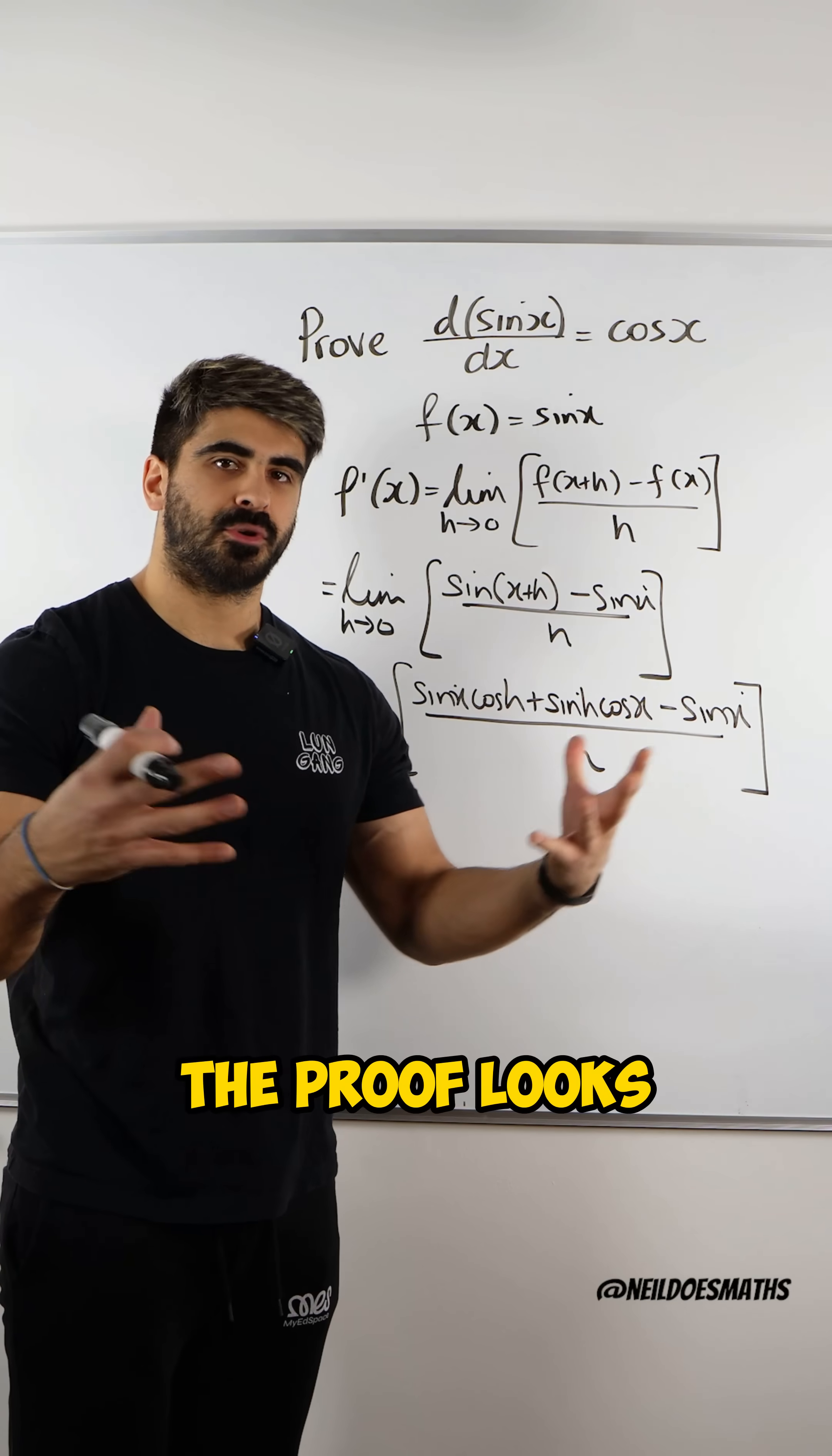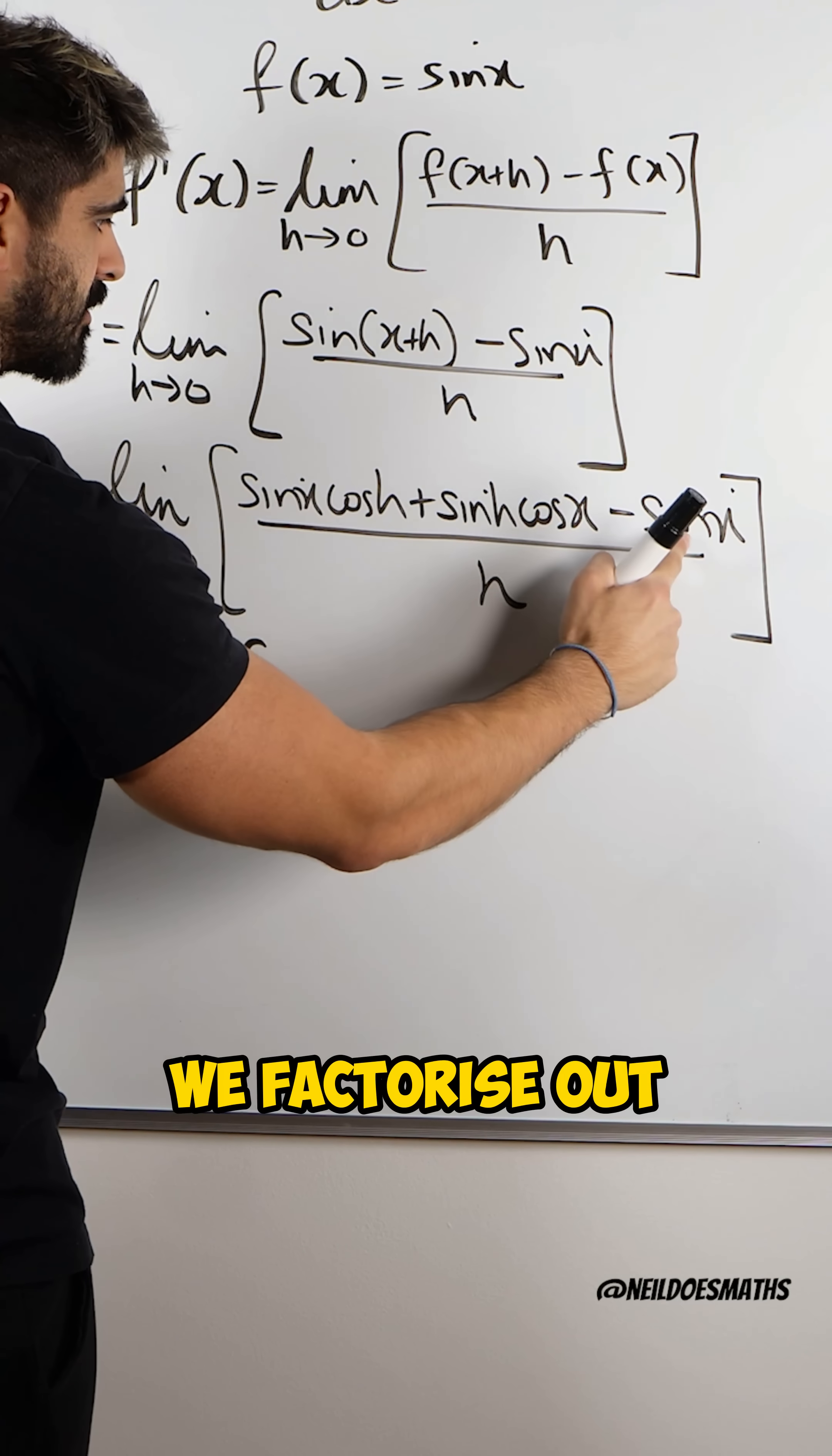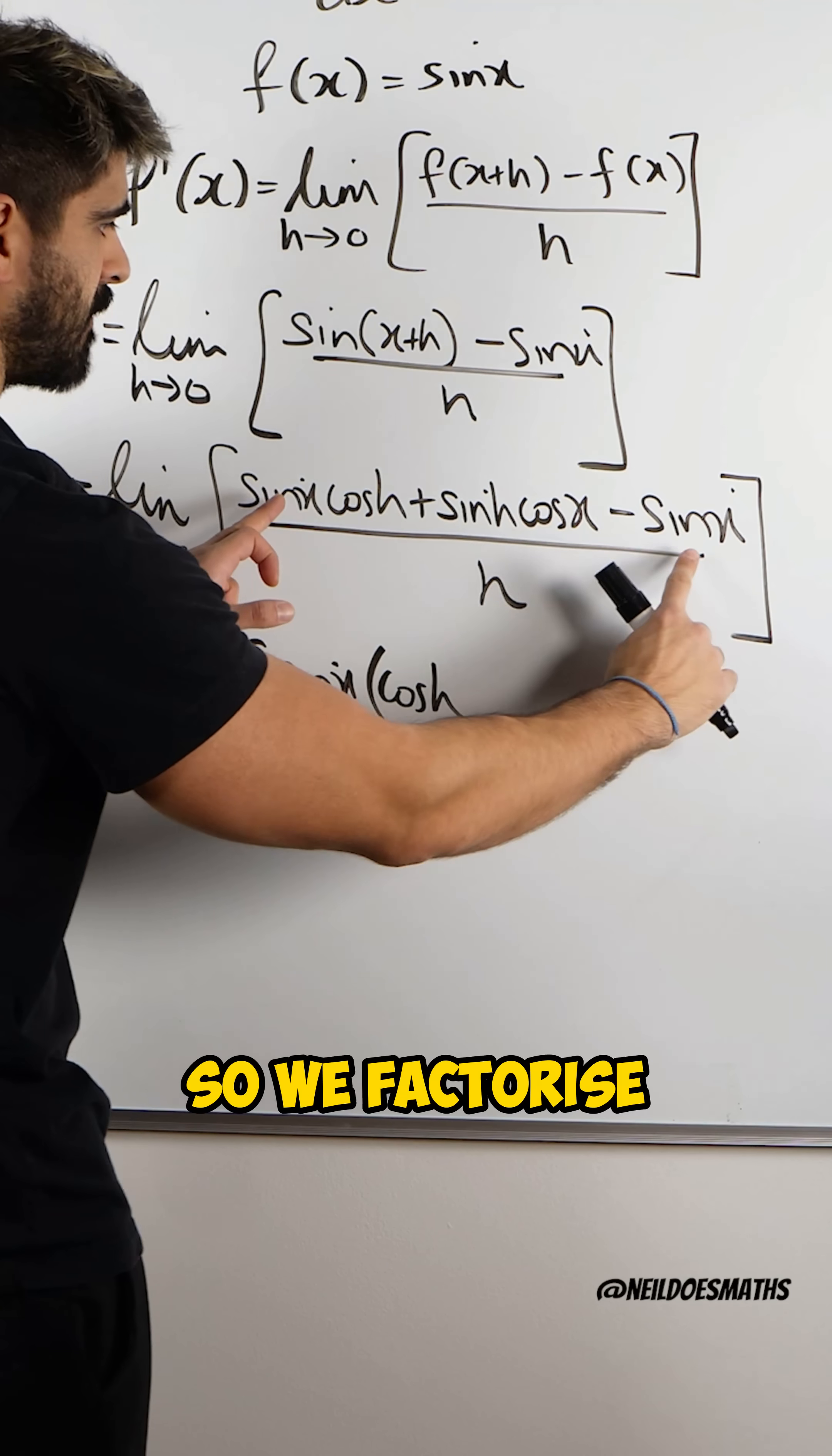Depending on where you are, the proof looks a little bit different. But in England, where I am based, we do it slightly differently. We factorize. We factorize out sin(x) from these two terms.